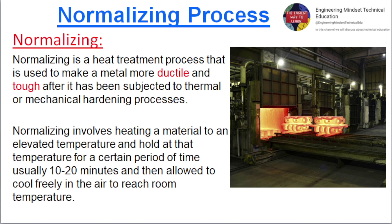Normalizing is a heat treatment process that is used to make a metal more ductile and tough after it has been subjected to thermal or mechanical hardening processes. Normalizing involves heating a material to an elevated temperature and holding at that temperature for a certain period of time, usually 10 to 20 minutes, and then allowing it to cool freely in the air to reach room temperature.